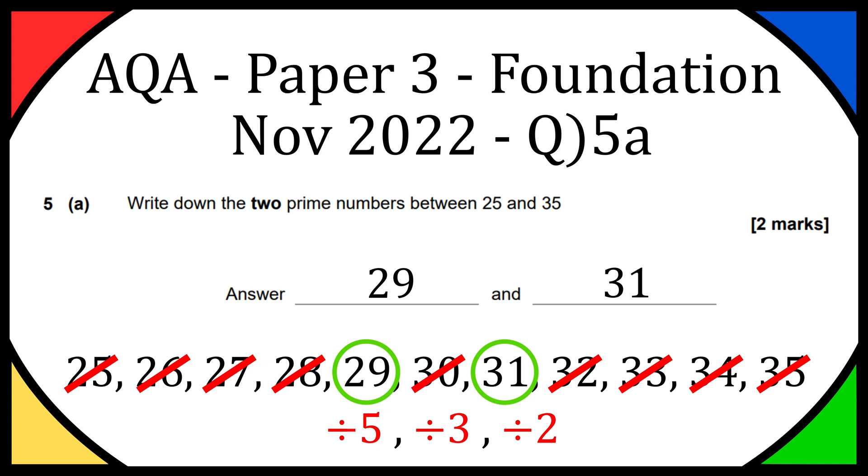So we're left with 29 and 31. Those are going to be our two prime numbers between 25 and 35.